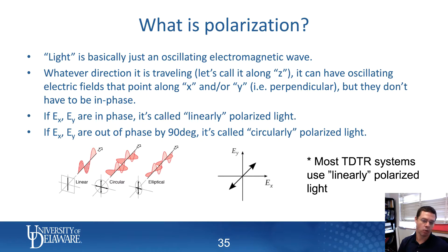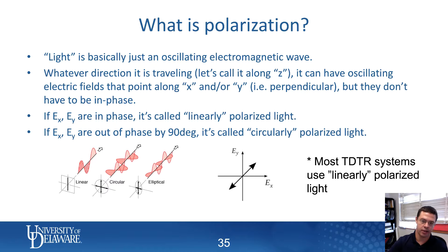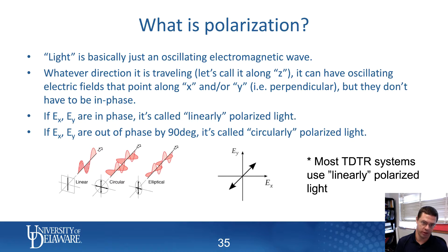So what is polarization? What are we even talking about here? Most people at least qualitatively know that light is basically just an oscillating electromagnetic wave. You can think about light as an electric field and a coupled magnetic field — an electric field whose amplitude varies sinusoidally both in space and in time. So if I'm at the same location and look at what happens over time, an electric field will oscillate up and down. And if at a particular time I move along some path, I'll see that the strength of the electric field varies sinusoidally in a particular direction.